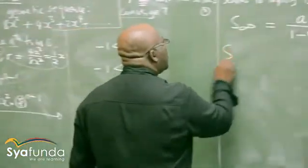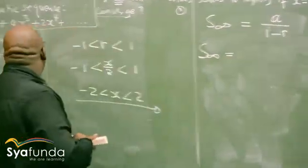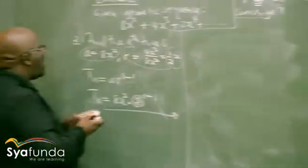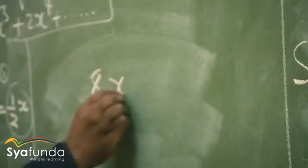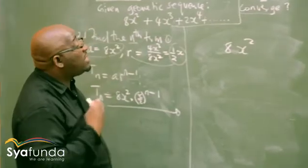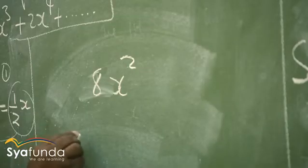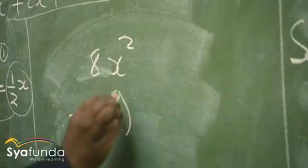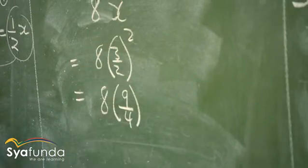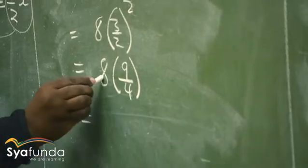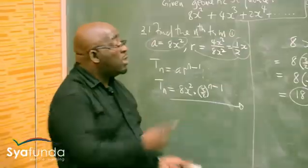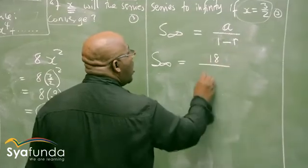Do we have what we need? Sum to infinity equals — do we know the first term? Our first term is 8x squared. But now we are given the value of x, so we can find the actual value of the first term. Wherever it is x, we push in 3 over 2. So we have 8 times (3 over 2) squared. That is 8 times 9 over 4. 4 goes into 8 twice, so 2 times 9 is 18. So the value of the first term is 18. Wherever we see a, we push in 18 — so we have 18 over 1 minus r.